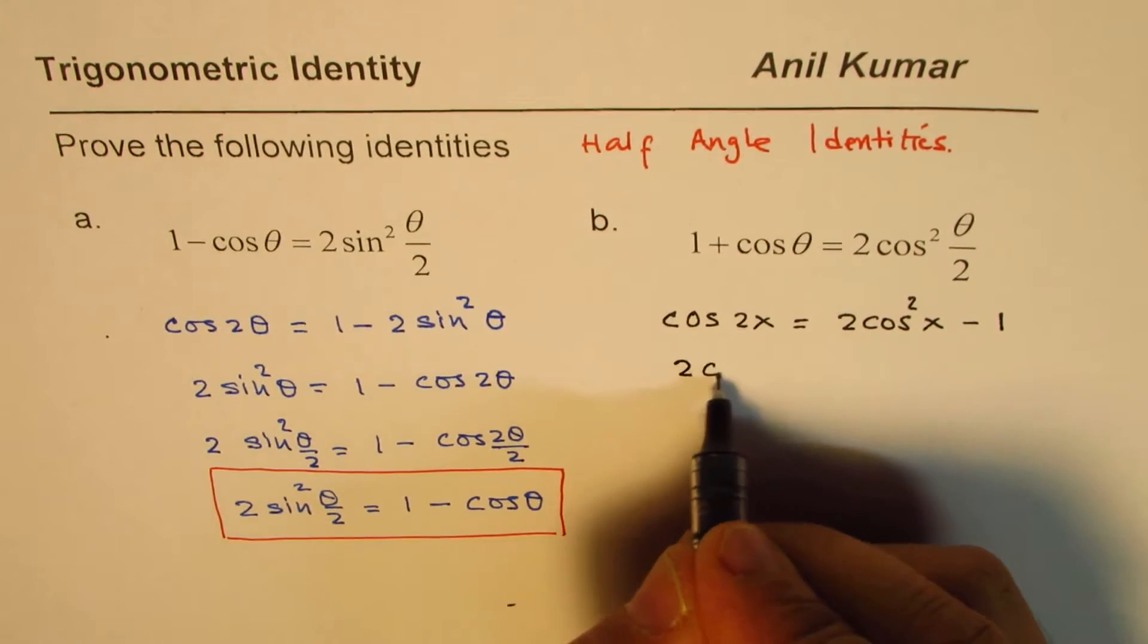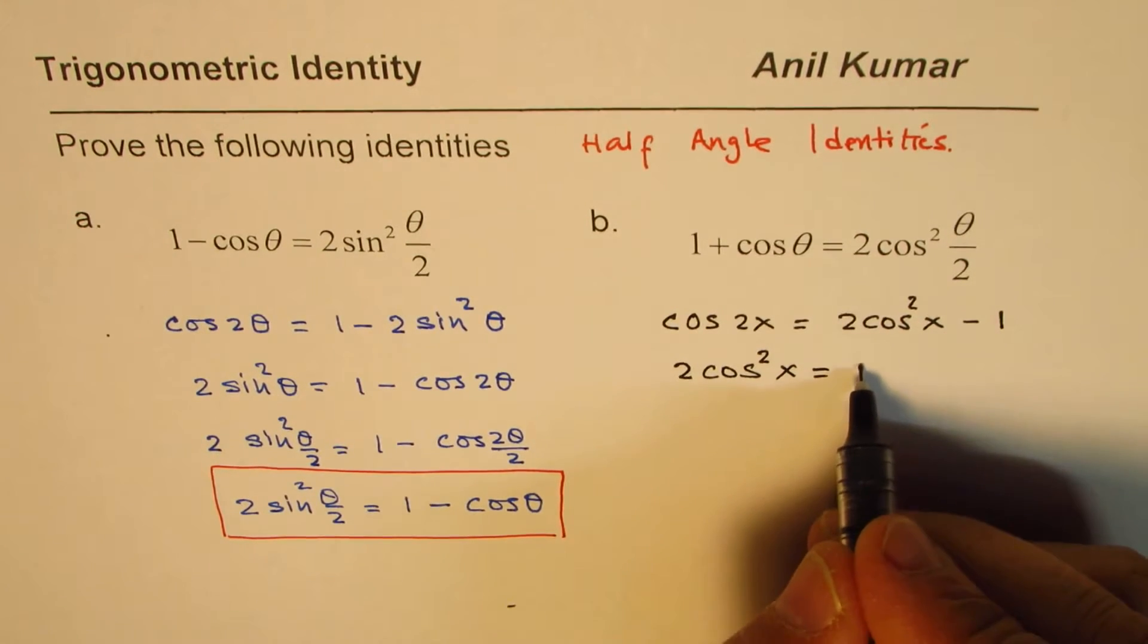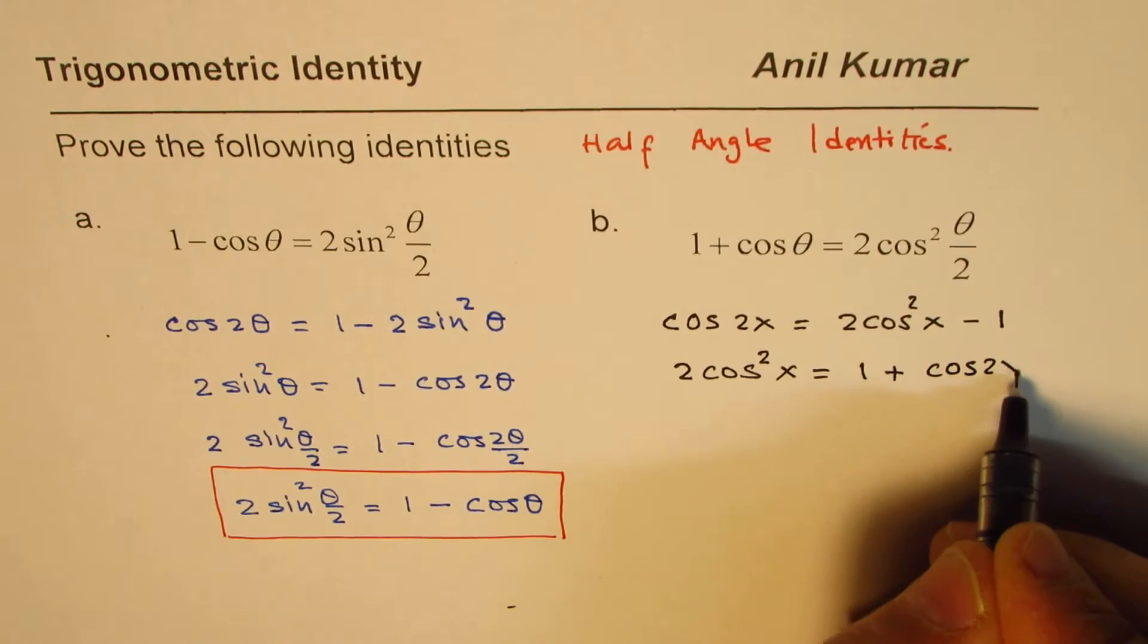Rearrange. So we get 2 cos square x equals to 1 plus cos 2x.